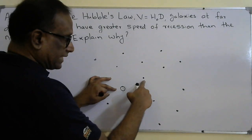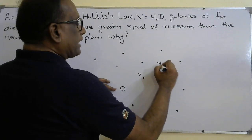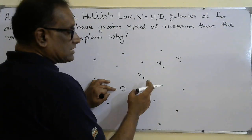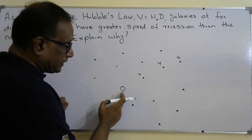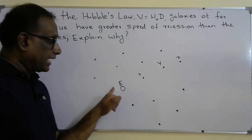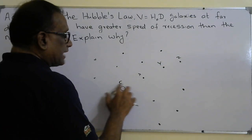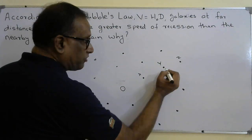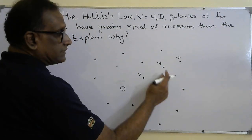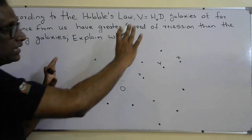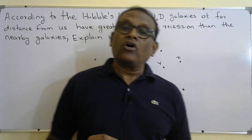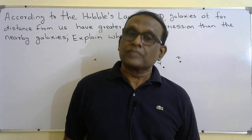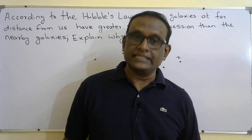If I measure the speed of recession of this galaxy — call this X, this is Y, and this is Z — the speed of recession of Z is greater than Y. The speed of recession of X is the lowest when measured from our location. Similarly, if there is an observer at Y and they measure the speed of recession of other galaxies, for them also the speed of recession increases with distance. So this concept holds relative to any galaxy.